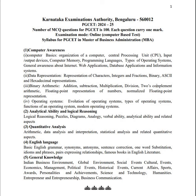The fourth part is the operating system — how the operating system evolved, types of operating systems, functions of an operating system, and modern operating systems currently in use. All these four parts are completely theoretical, and only a little bit of math is required in the third part, which is binary arithmetic, and that is also fairly easy. So I think we can score good marks in computer awareness.